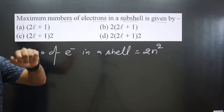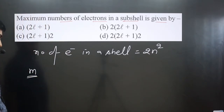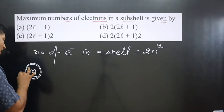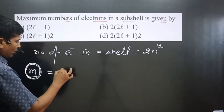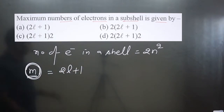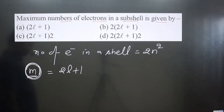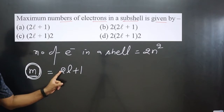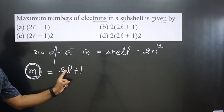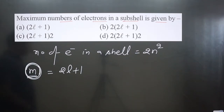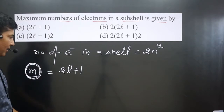The number of orbitals in a subcell is equal to 2L + 1. This is the formula. So the number of orbitals can be calculated using 2 multiplied by L plus 1, where L represents the subcell.